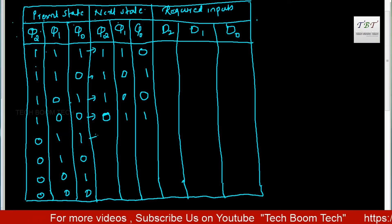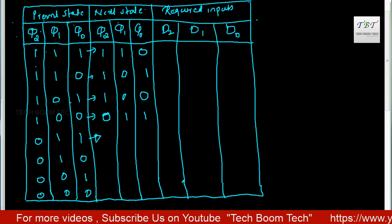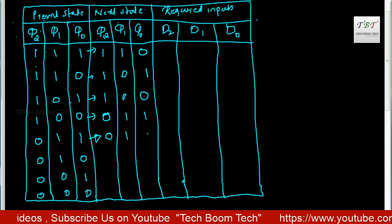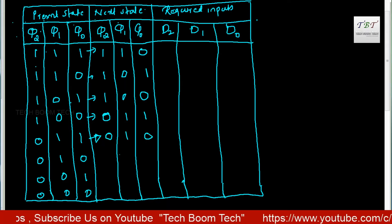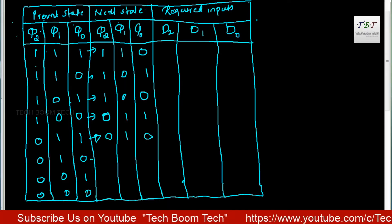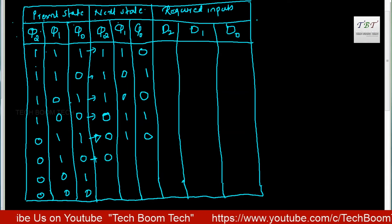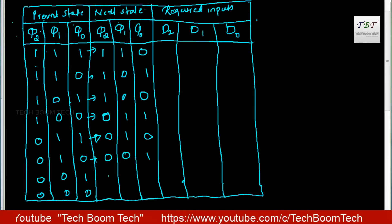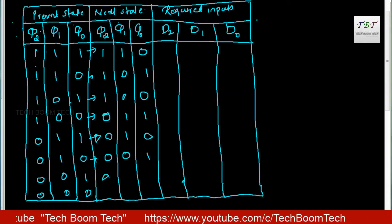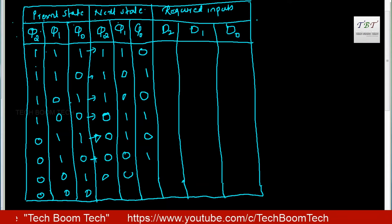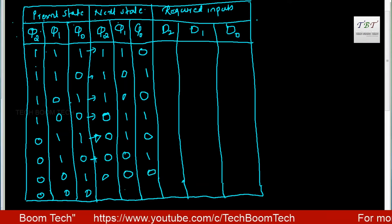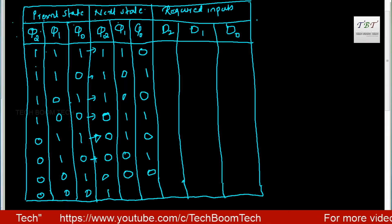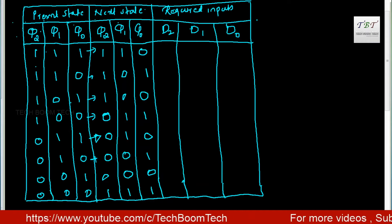If you want to fill 011, you will find the next state in the down counter. For example, after 011 comes 010, then 001, then 000. Now fill in the next state column accordingly.